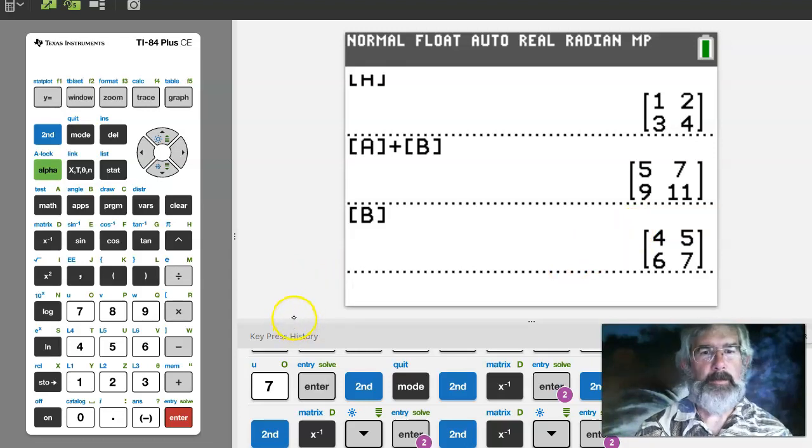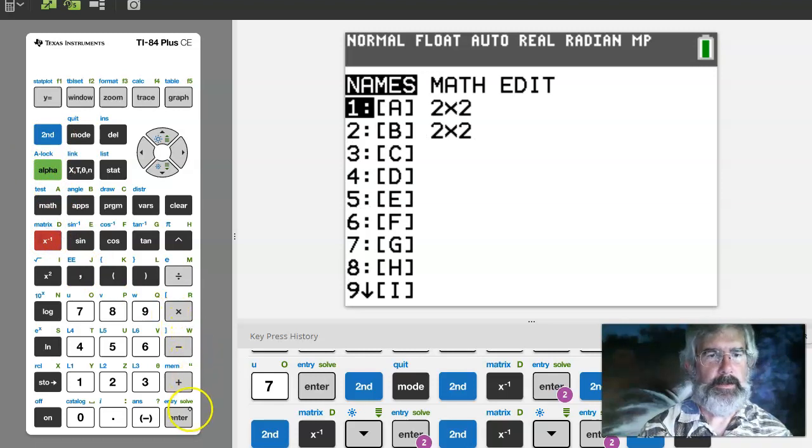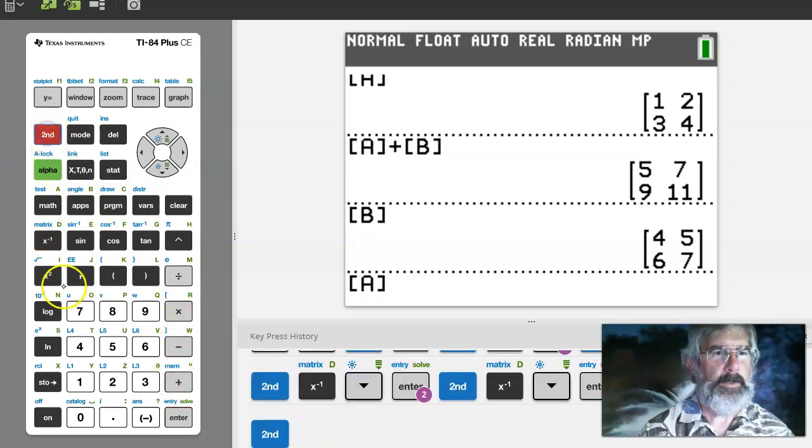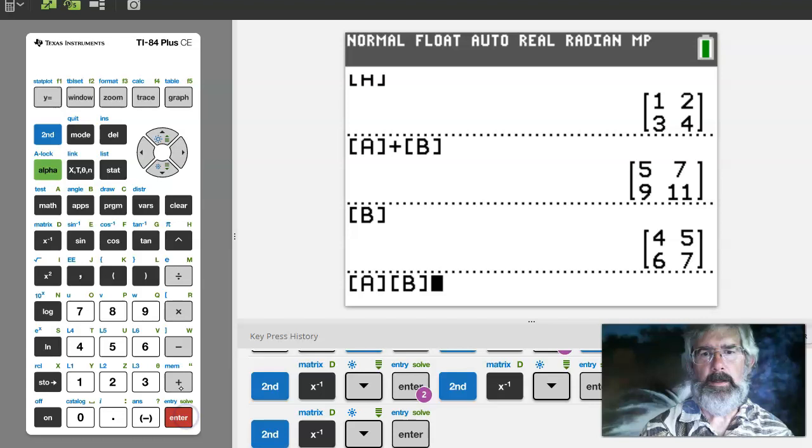We could multiply them together, and by multiplying them together I just stick them next to each other, just like you would the notation that you'd write it. So I can say give me matrix A and then give me matrix B.